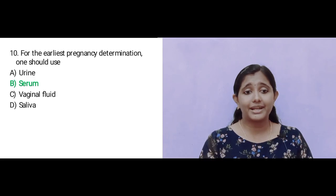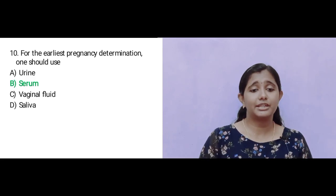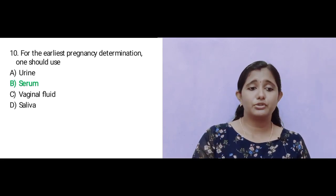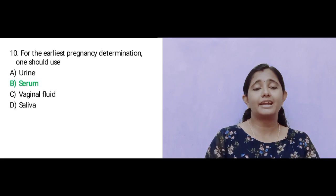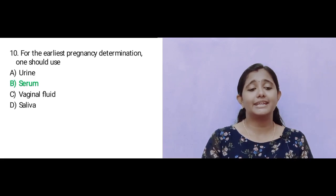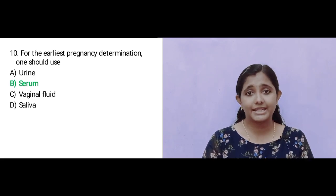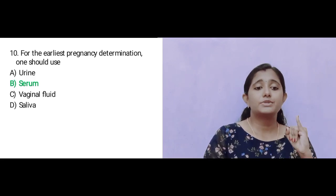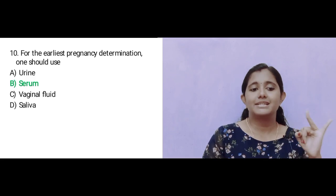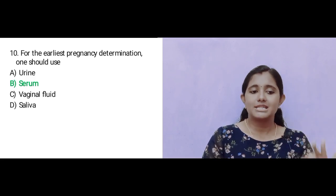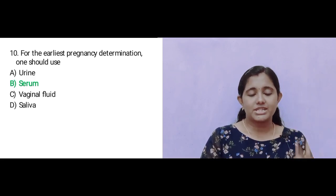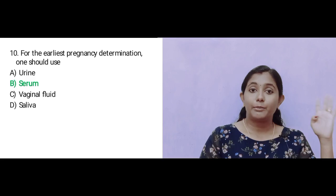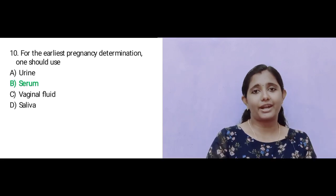Question number 10: For the earliest pregnancy determination, one should use — Option A: urine; Option B: serum; Option C: vaginal fluid; Option D: saliva.